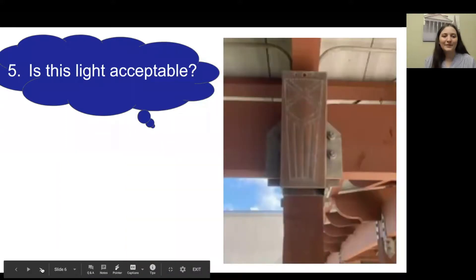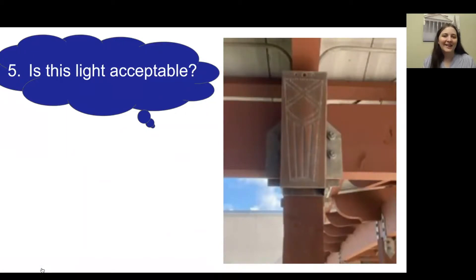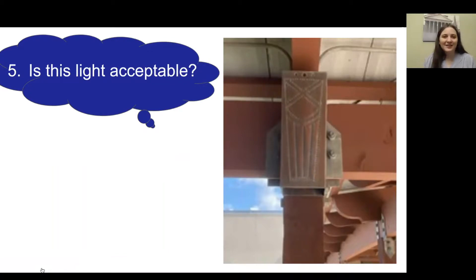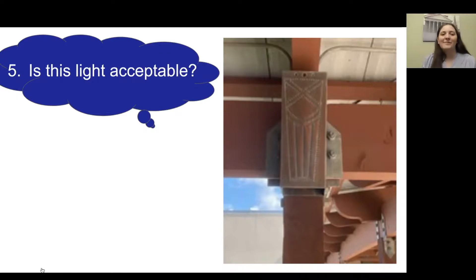Number five: is this light acceptable? As you can see, this is lighting up a pathway. Think through usefulness, light shielding, color temperature, and blue light — everything we've learned to decide if this light is acceptable.